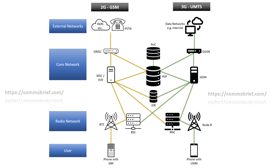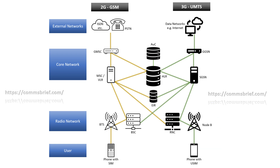On the other side of SGSN, you have GGSN, which is Gateway GPRS Support Node. GGSN is like a router that connects the SGSN to the outside IP world, for example, the Internet and X.25 networks. Similarly, on the 3G UMTS side, SGSN is connected to the RNC, the radio network controller. The RNC then connects to Node B, which provides wireless connectivity to mobile phones.